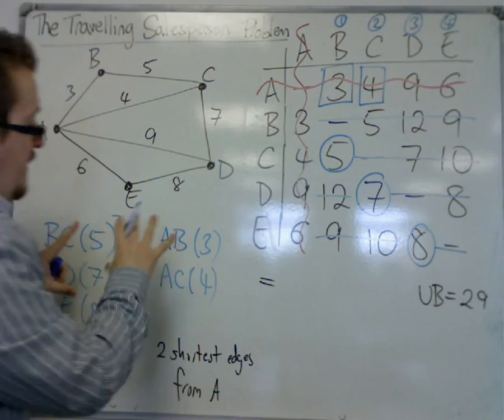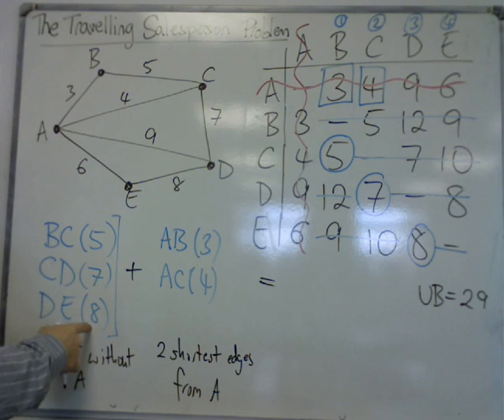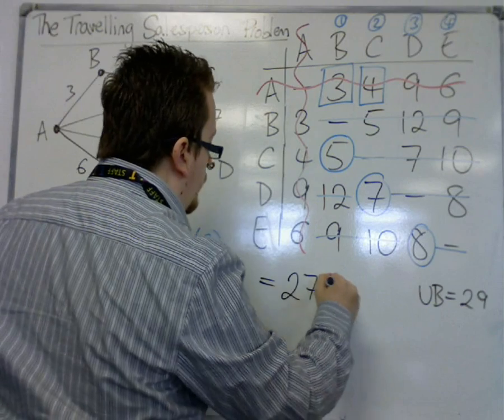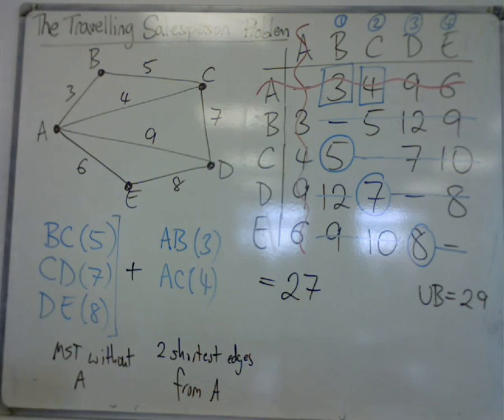So the minimum is all of these edges added together. So we've got 5, 12, 20, 23, 27. So 27 is our lower bound.